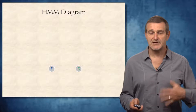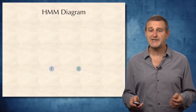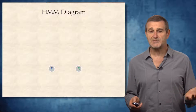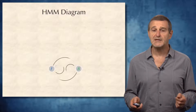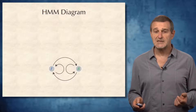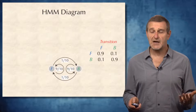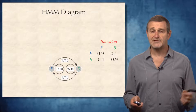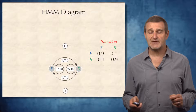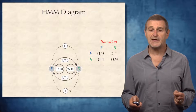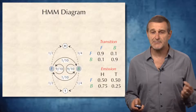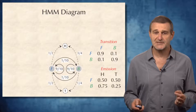We will represent HMMs with HMM diagrams. In the case of the crook-casino, our HMM has two states, F and B, and there are all possible transitions between these states described by the transition probability matrix. This HMM emits two symbols, H and T, and the probability of emitting each symbol is described by the emission probability matrix.